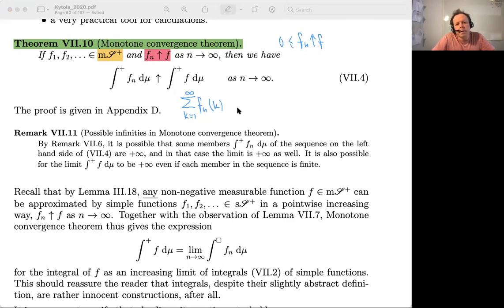So then the claim is that the limit when n goes to infinity of this sum is equal to the sum of the limit. This is, in a way, we could think this is a corollary of the monotone convergence theorem, an extremely important corollary. And what is this actually? How do you prove this?